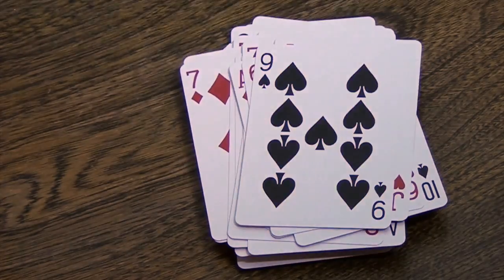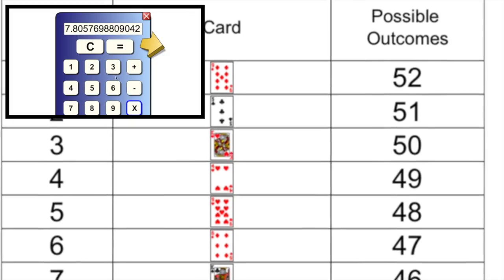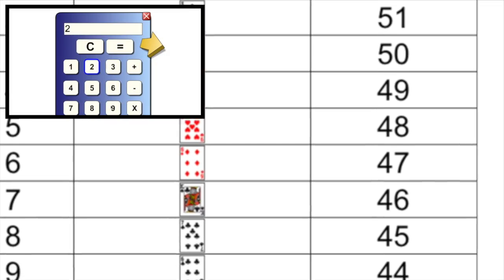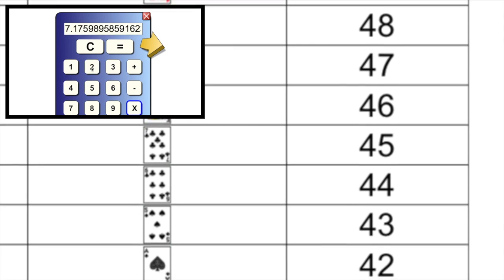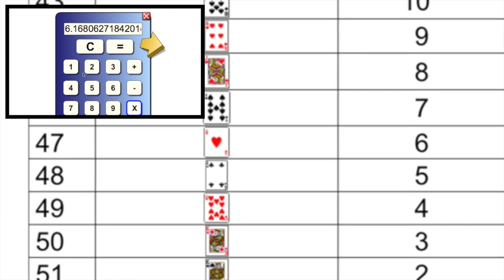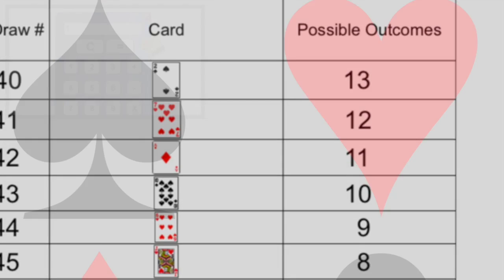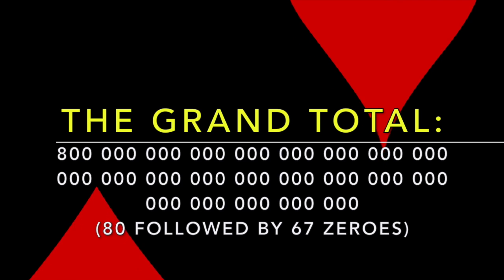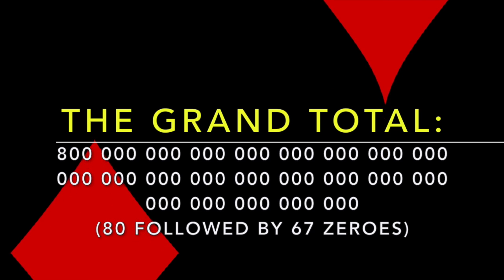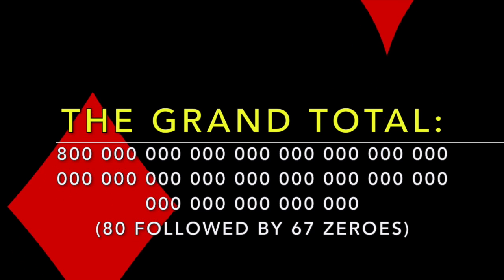We'll fast forward now to the end of the deck. The probabilities for each draw are recorded in these charts. I'll plug all of this data into the calculator and presto. So the probability of having a shuffled deck with this exact order is one in that gigantic number. An 80 followed by 67 zeros.